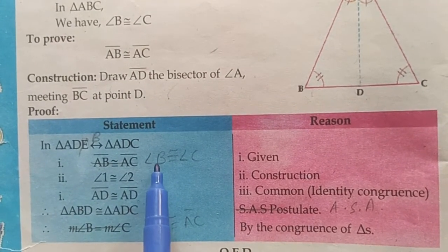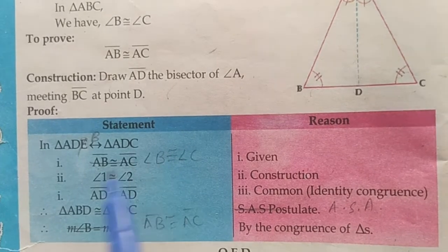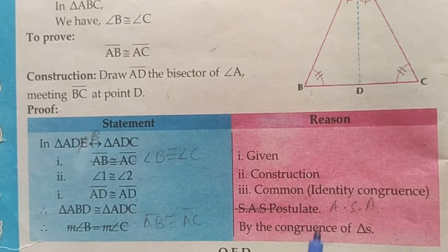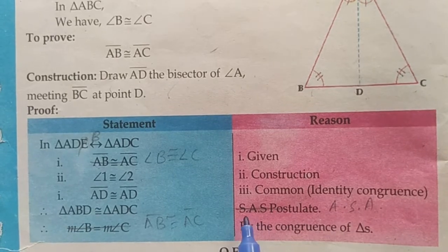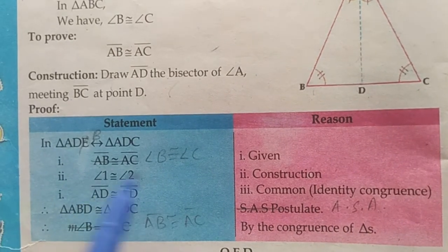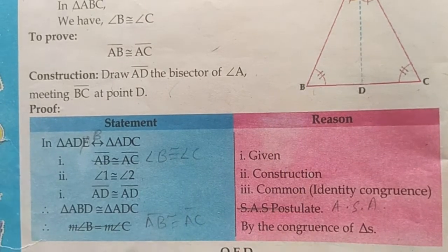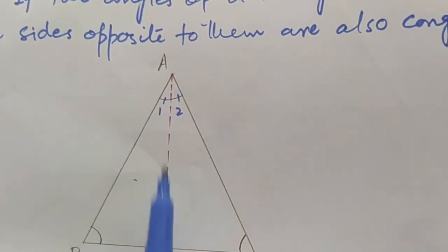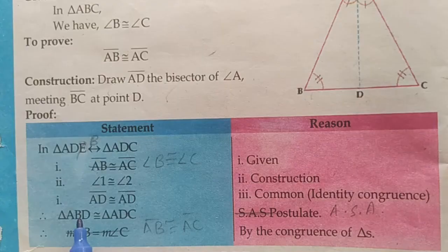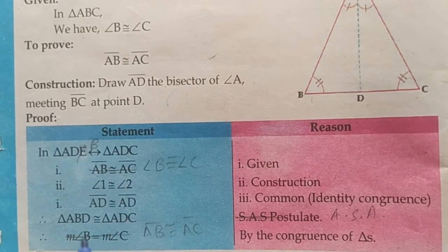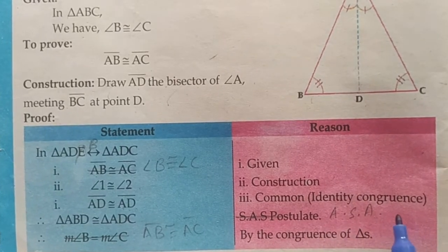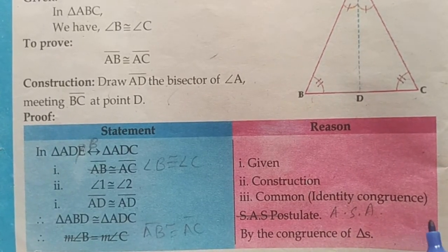We now have two angles and one included side of triangle ADB congruent to two angles and the corresponding side of triangle ADC. So by the Angle Side Angle postulate, triangle ABD is congruent to triangle ADC. The reason is the Angle Side Angle postulate, which was proved previously.